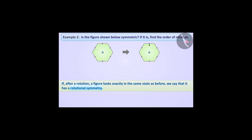When this shape is rotated at an angle of 60 degrees, we see that this shape exactly matches the earlier figure. That is, both the figures look exactly in the same state. In this way, we can say that this shape has rotational symmetry.